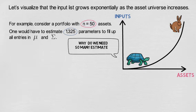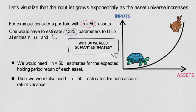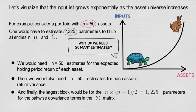Let's check why we need that many estimates. We would need n equals 50 estimates for the expected holding period return of each asset. Then we would also need n equals 50 estimates for each asset's return variance. And finally the largest block would be for the n times n minus 1 over 2, which gives us 1,225 parameters for the pairwise covariance terms in the sigma matrix.